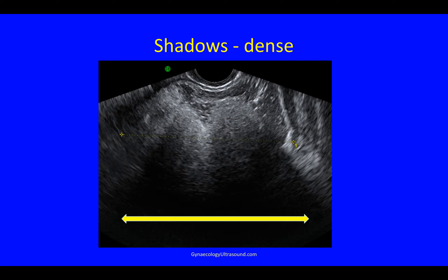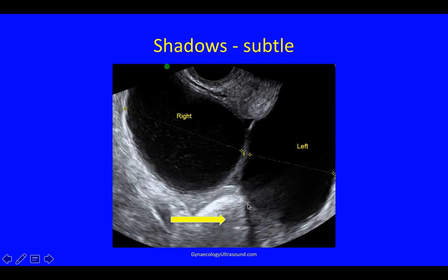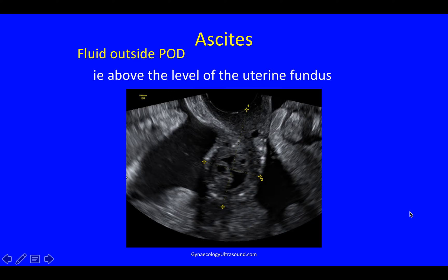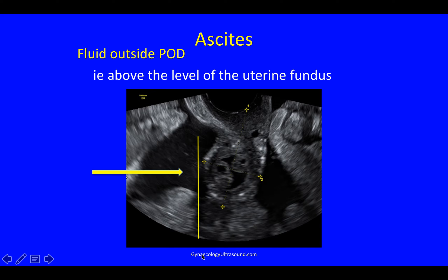We also look for shadowing, and you have to actively look for this. This is dense shadowing behind a mass, but you can also find very fine shadowing behind a mass. Ascites is described as fluid outside of the pouch of Douglas. In a longitudinal view, this is the pouch of Douglas, and you can see that if you draw a line at the fundus of the uterus, there is fluid above it — so this is ascites.